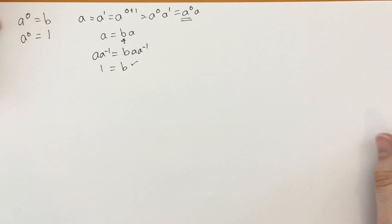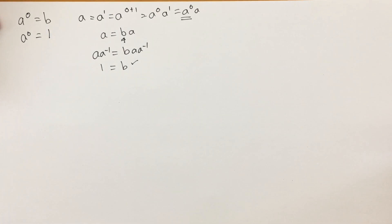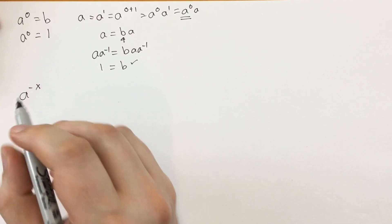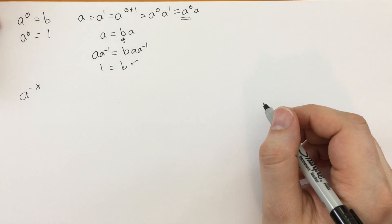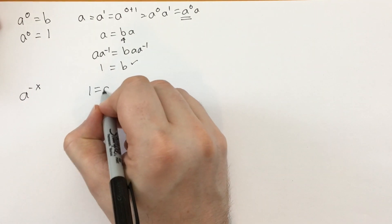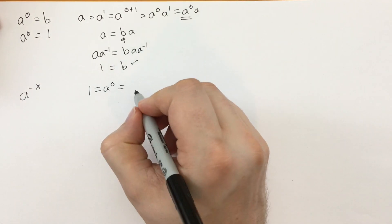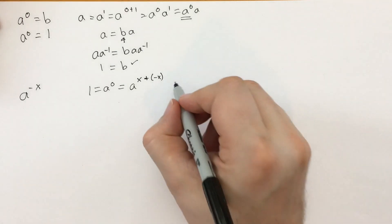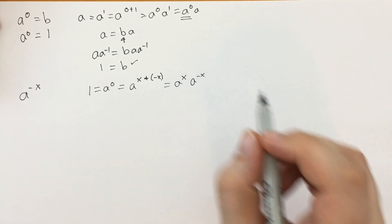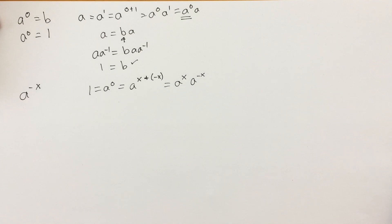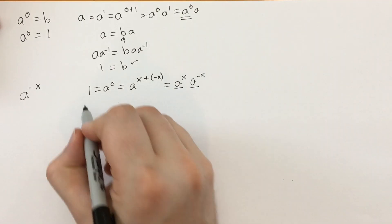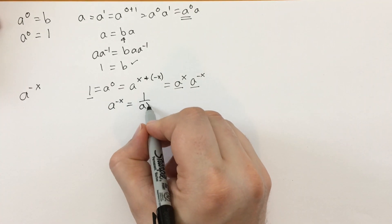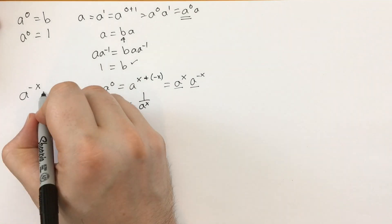Next: what does a to the minus x mean? We know 1 equals a to the zero equals a to the x plus minus x, so that's a to the x times a to the minus x. Thus a to the x times a to the minus x equals 1, so a to the minus x equals 1 over a to the x.